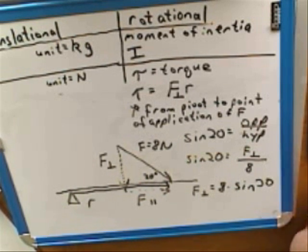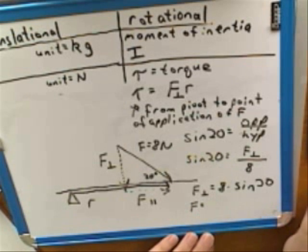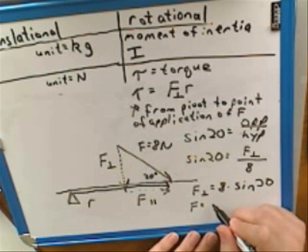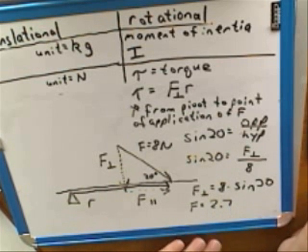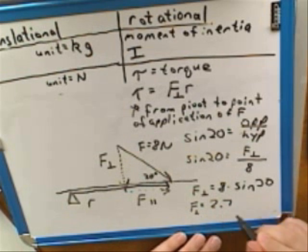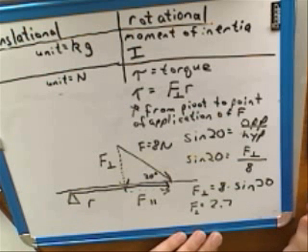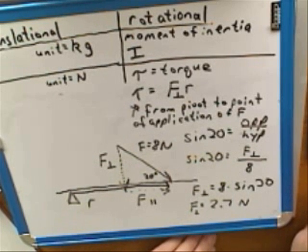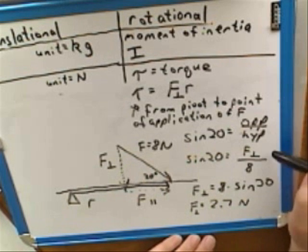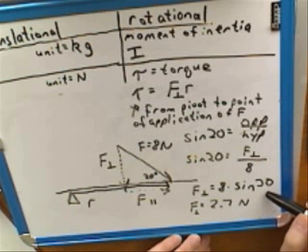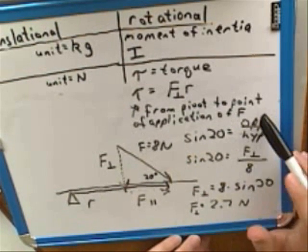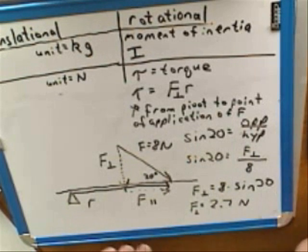Do you want me to calculate that? Yes, please. 8 sine 20 — so that's 2.74, we'll just call that 2.7. The units on that, because it is a force, would be Newtons. When people have done a lot of these, they skip the first steps and jump straight to saying F perpendicular equals 8 times sine 20. But anytime you're getting confused, the best thing is to go back to sine equals opposite over hypotenuse. So F perpendicular here is 2.7 Newtons.